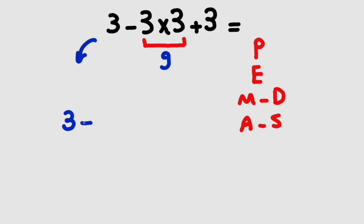Now we have 3 minus 9 plus 3. And as we know, addition and subtraction are equally important, so we have to solve from left to right. So 3 minus 9 gives us negative 6, and negative 6 plus 3 gives us negative 3.